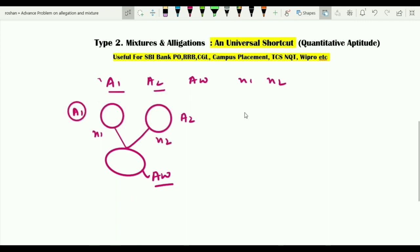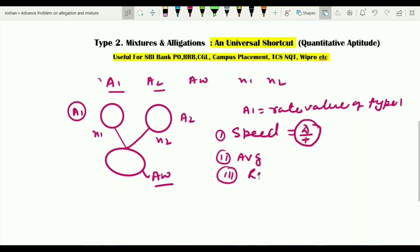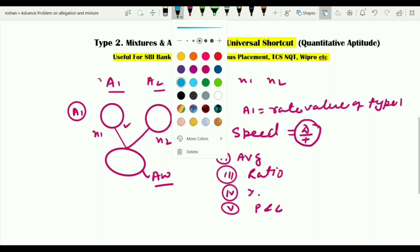Let me come back to A1 in detail. What exactly is the meaning of A1? A1 is nothing but rate value of type one. What exactly is the meaning of rate value? Speed is defined as rate of distance travel, which is distance by time. So any term which is of the form A by B, we call them as a rate value here. Examples will be speed, averages, ratio, percentages, profit and loss. This is one of the universal topics because this can be used in almost all the topics which I've written. Only condition is that two things are mixed together to produce a third one. In such situations, you can always use the allegation concept.